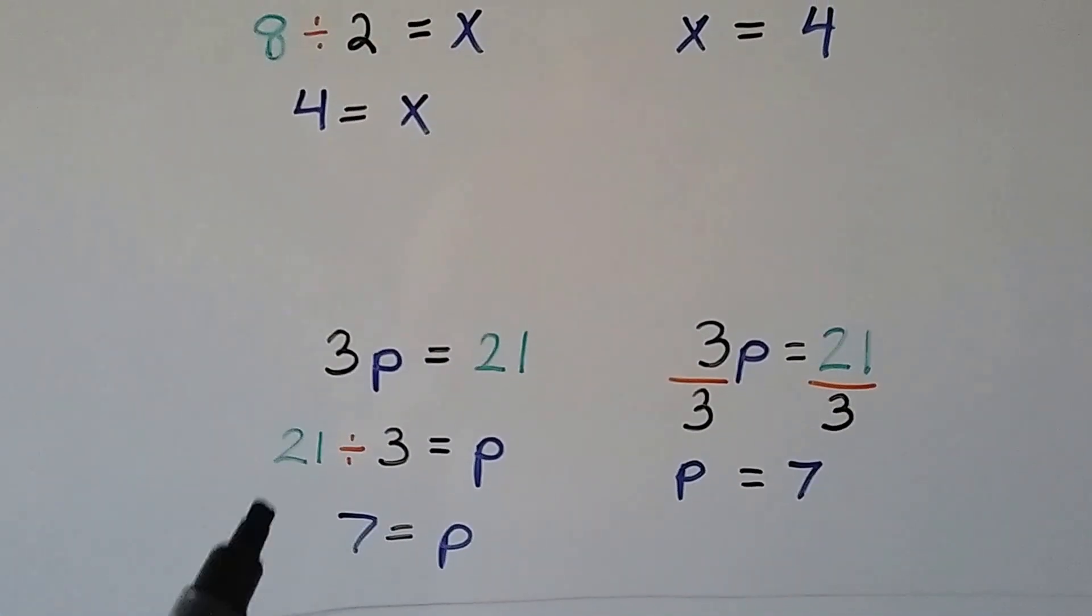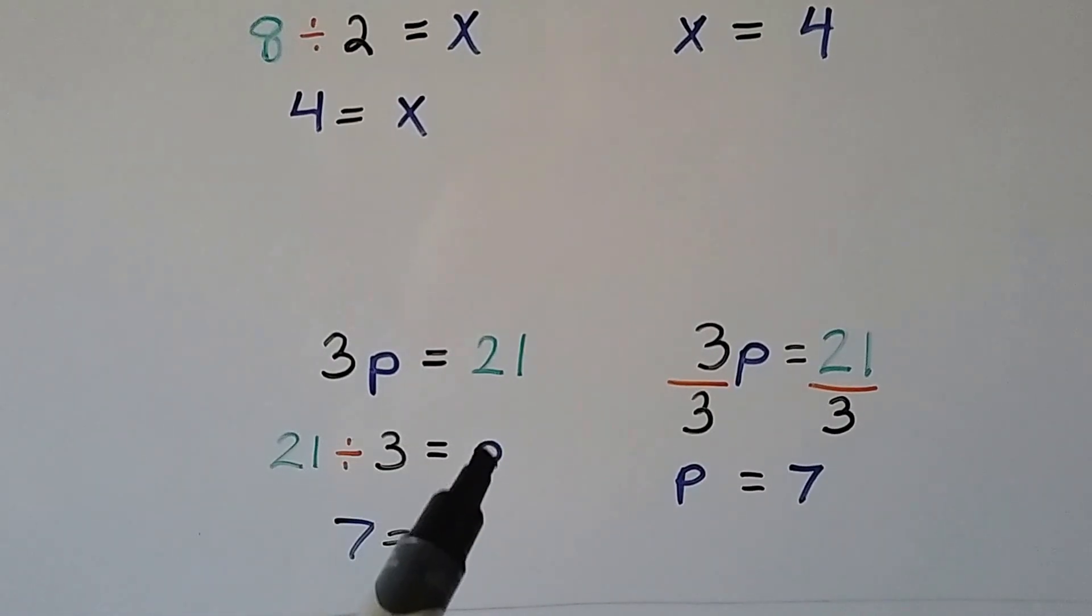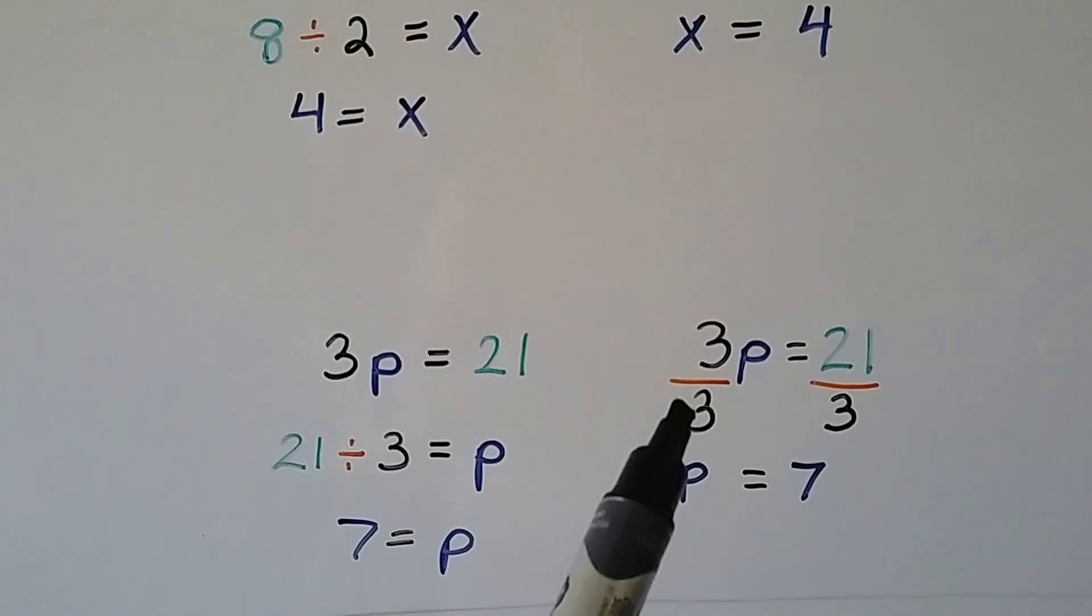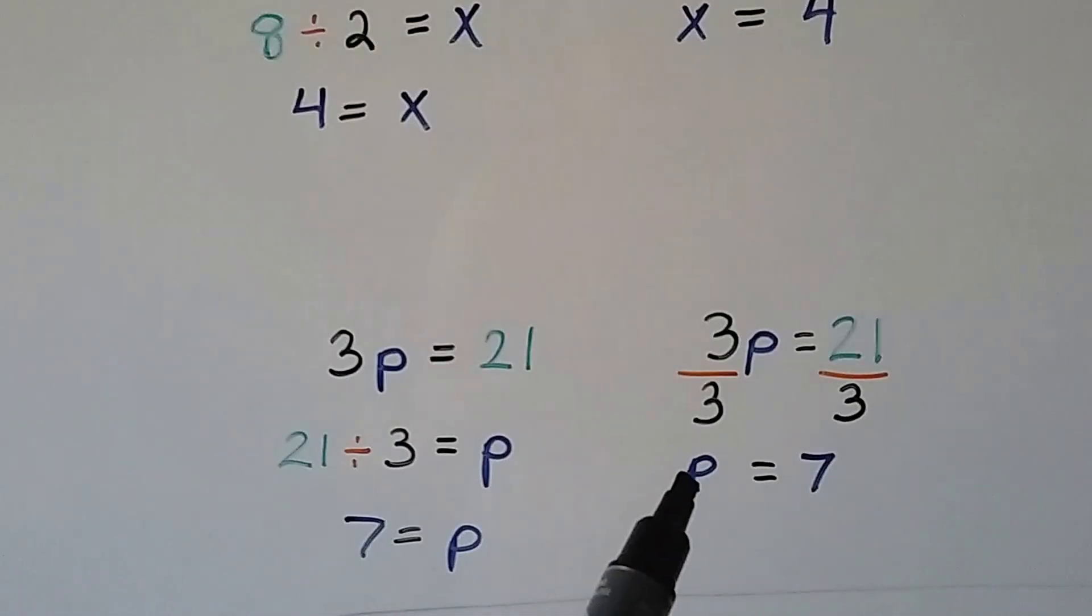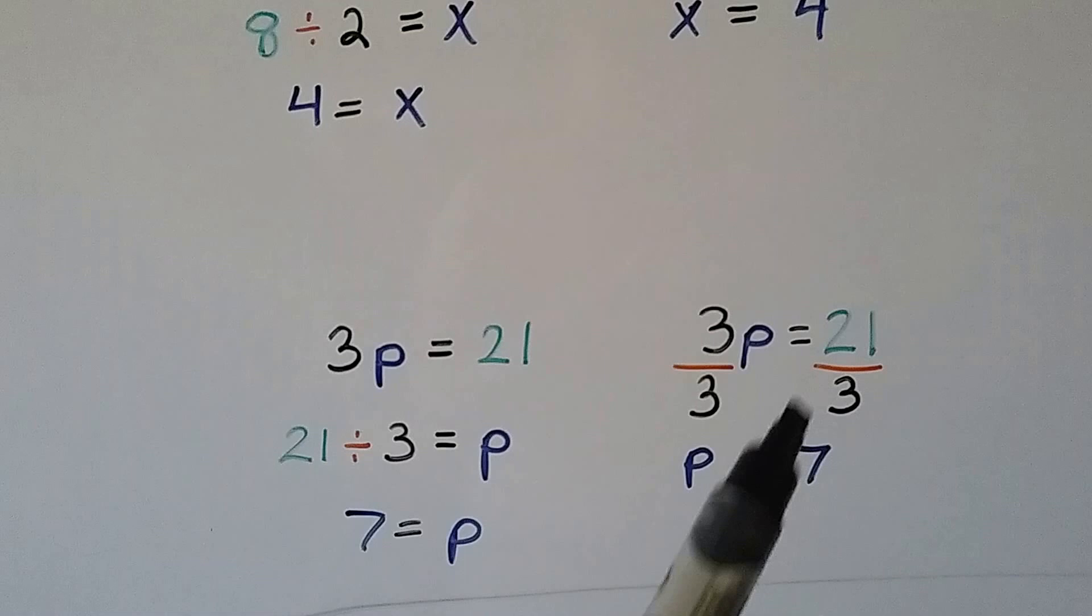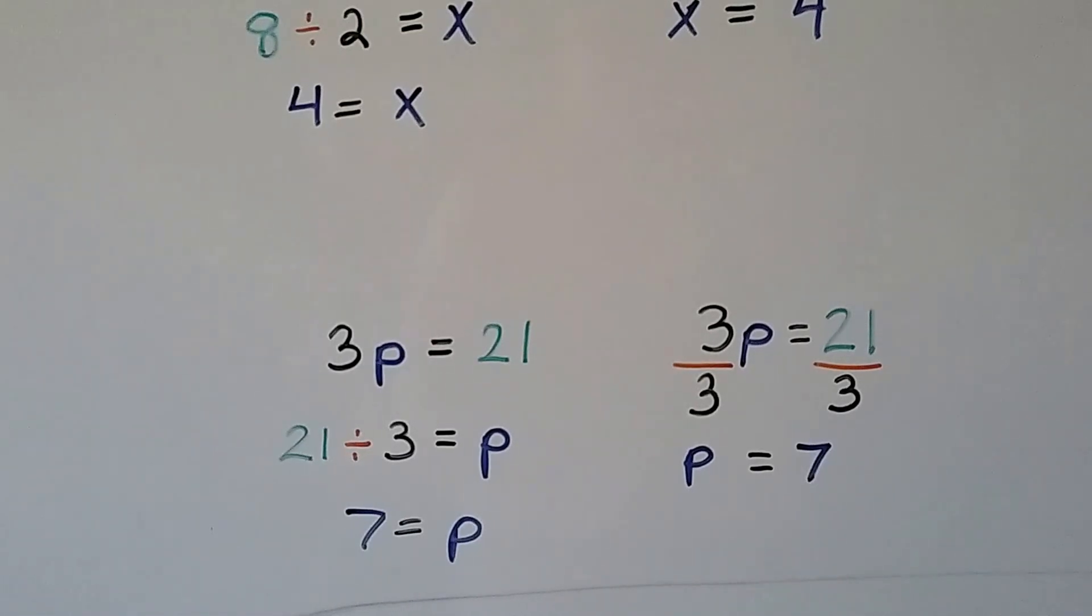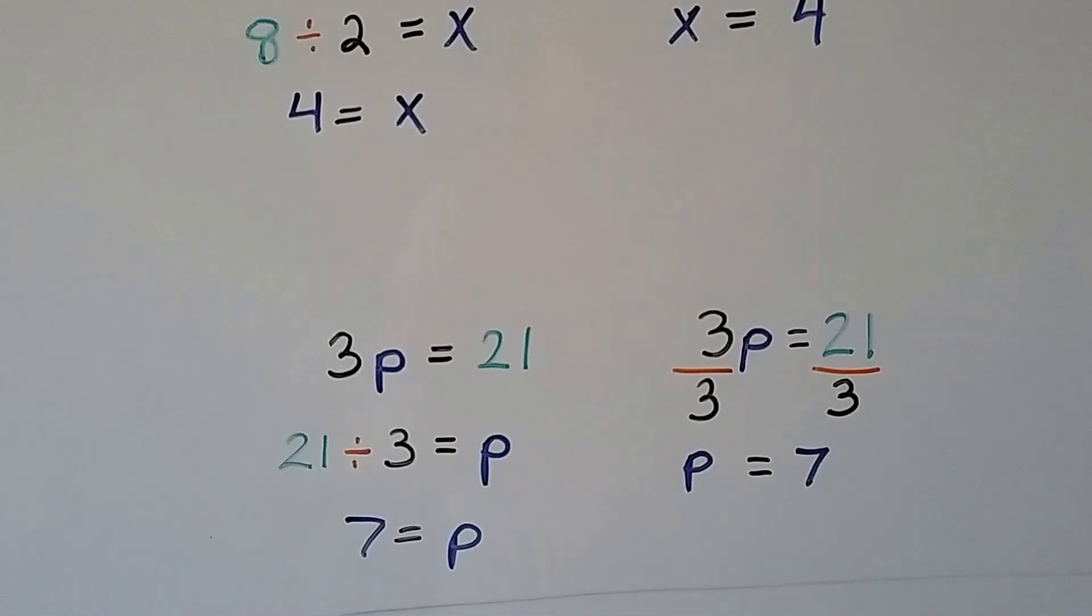3p equals 21. 21 divided by 3 equals p. That's a 7. We divide both sides of the equation by this 3 coefficient and get 1p equals 21 thirds, which simplifies to 7, or 21 divided by 3.